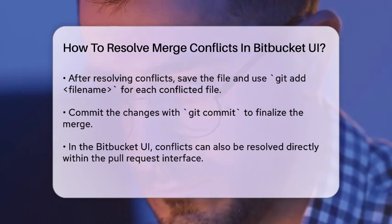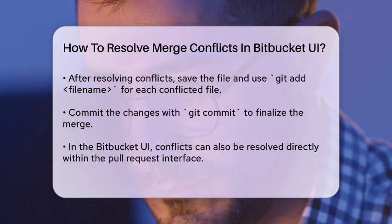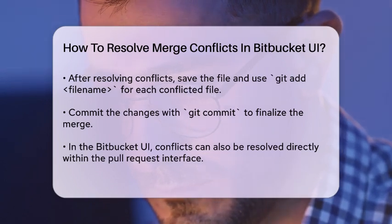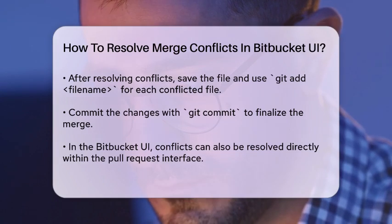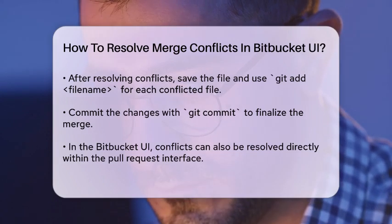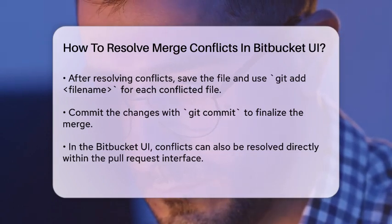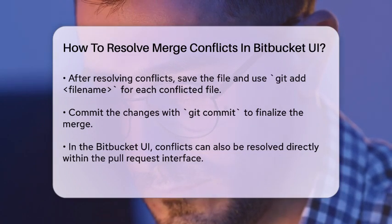Then, you need to tell Git that you've resolved the conflict. Do this by running git add filename for each conflicted file. After adding all the files, commit the changes with git commit. This will create a new merge commit that finalizes the merge.